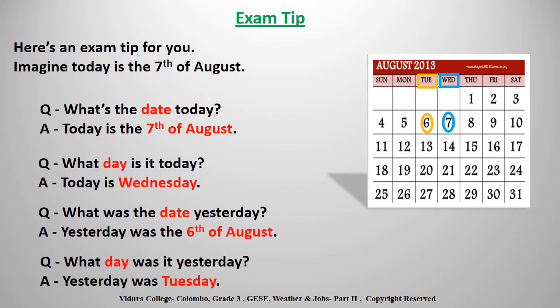Here is an exam tip for you. Look at the calendar and imagine today is the 7th of August. In the exam, if the examiner asks 'What's the date today?' you should answer 'Today is the 7th of August.' If asked 'What day is it today?' answer 'Today is Wednesday.' If asked 'What was the date yesterday?' answer 'Yesterday was the 6th of August.' Finally, if asked 'What day was it yesterday?' answer 'Yesterday was Tuesday.'